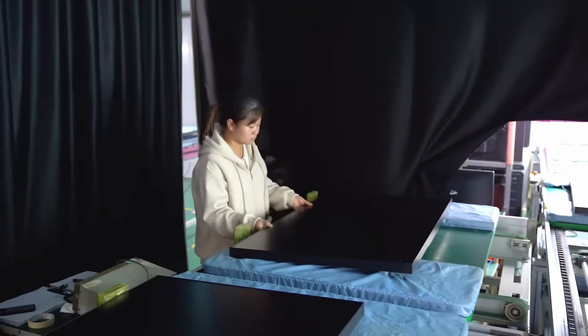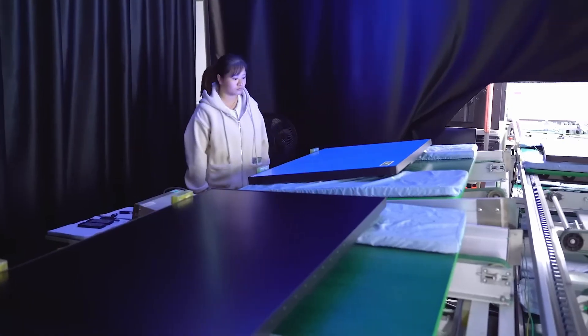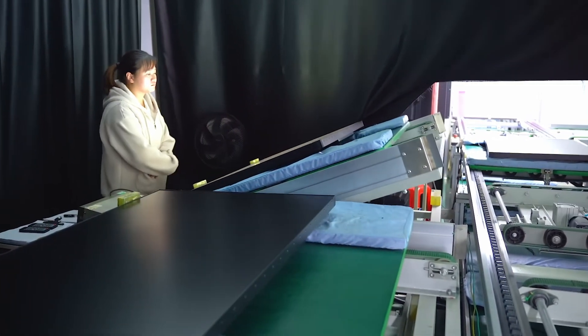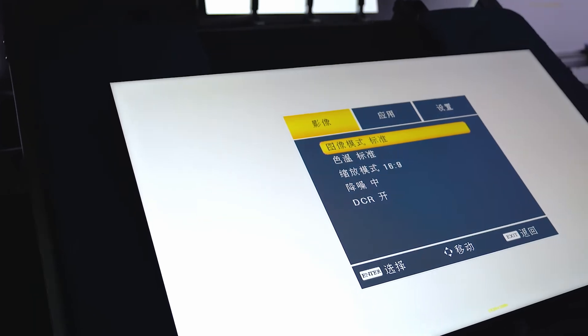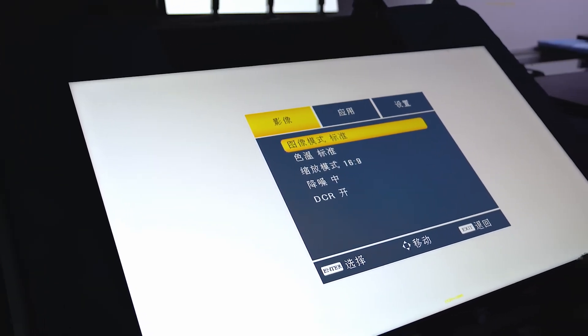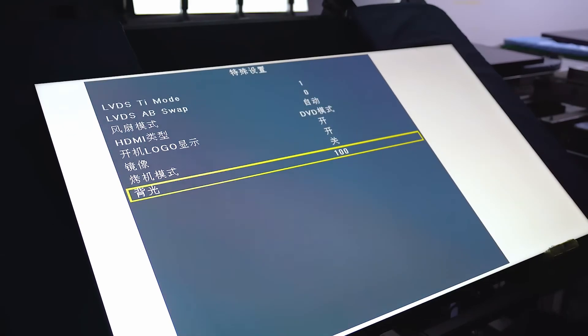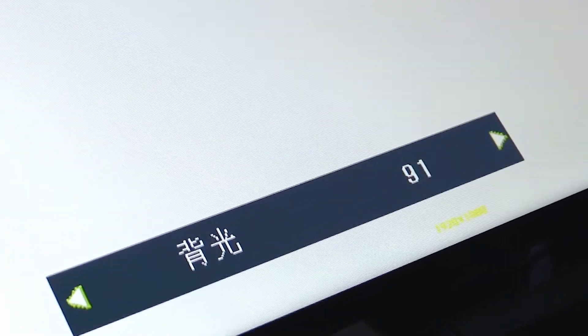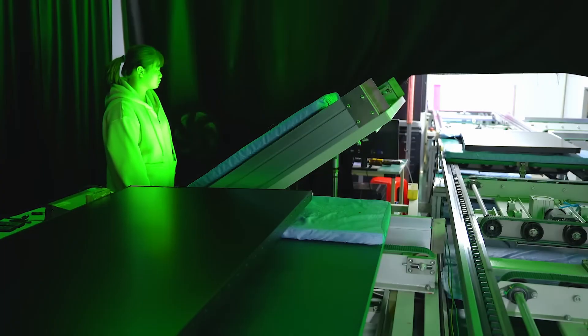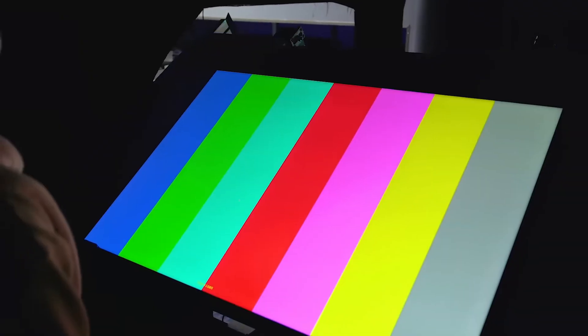Each TV is then calibrated to ensure that the colors displayed are accurate and vibrant. This involves adjusting the color balance, brightness, and contrast settings to match industry standards. Advanced color testing equipment is used to measure the TV's performance, ensuring that it delivers the rich and lifelike images that consumers expect.